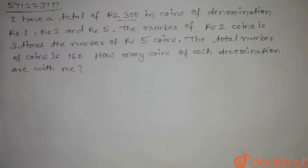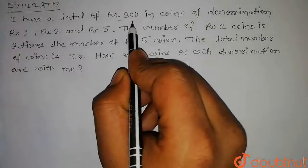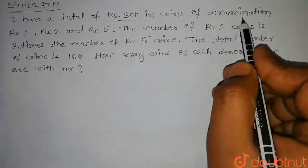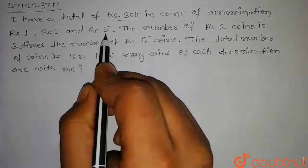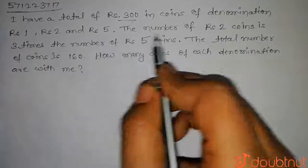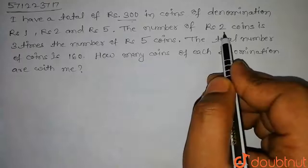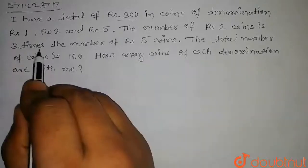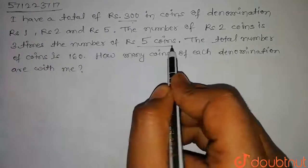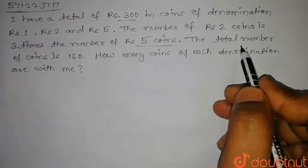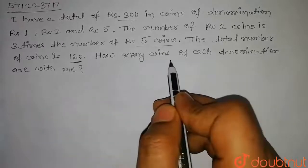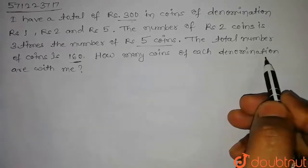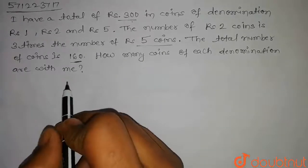The question is: I have a total of Rs.300 in coins of denomination Rs.1, Rs.2 and Rs.5. The number of Rs.2 coins is 3 times the number of Rs.5 coins. The total number of coins is 160. How many coins of each denomination are with me?